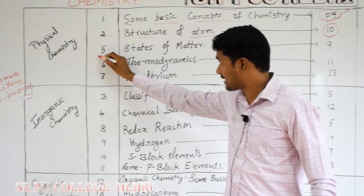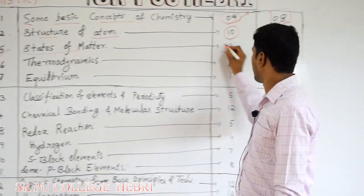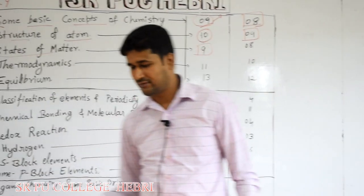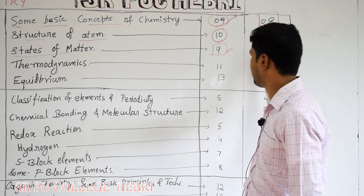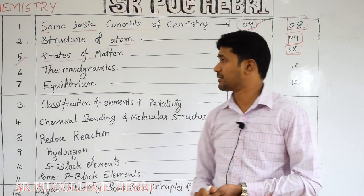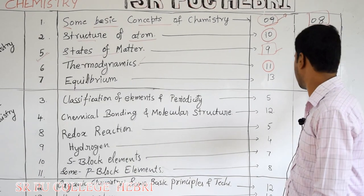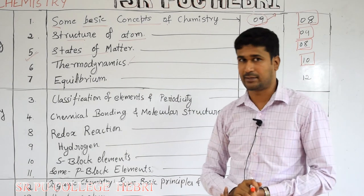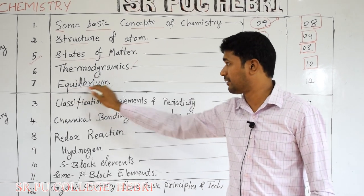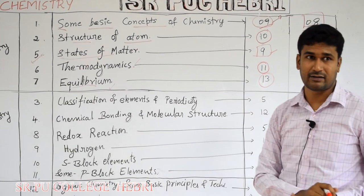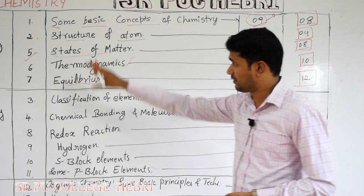Chapter number 5 in chemistry is 'States of Matter,' which belongs to physical chemistry. Total hours allotted is 9 and weightage of marks is 8. Chapter number 6 is 'Thermodynamics' — total hours allotted is 11 and weightage of marks is 10, so you will get 10 mark questions from this chapter. Chapter number 7 is 'Equilibrium,' the fifth chapter in physical chemistry and the biggest chapter — total hours allotted is 13 and total weightage of marks is 12.